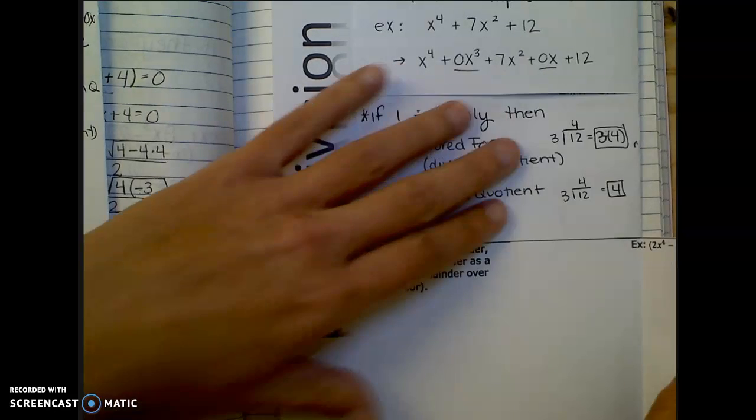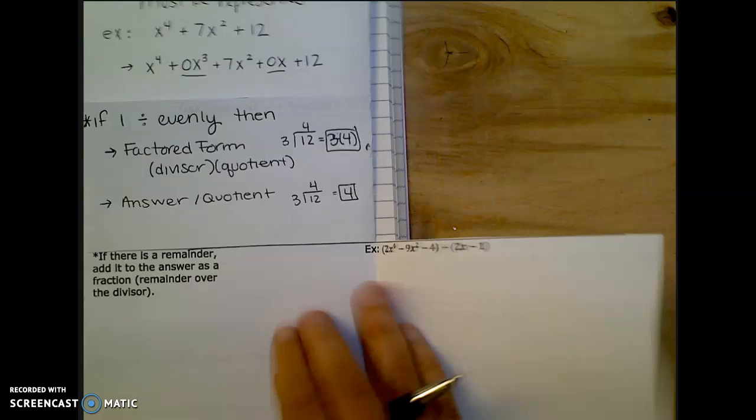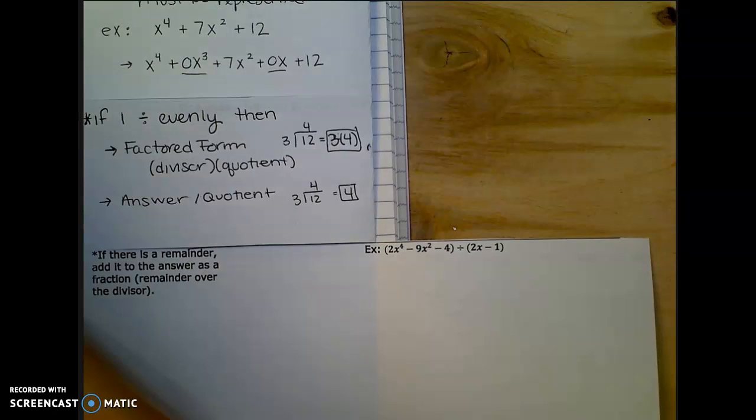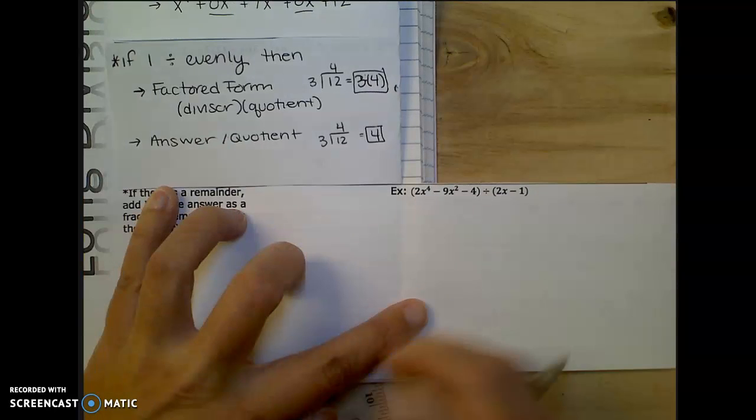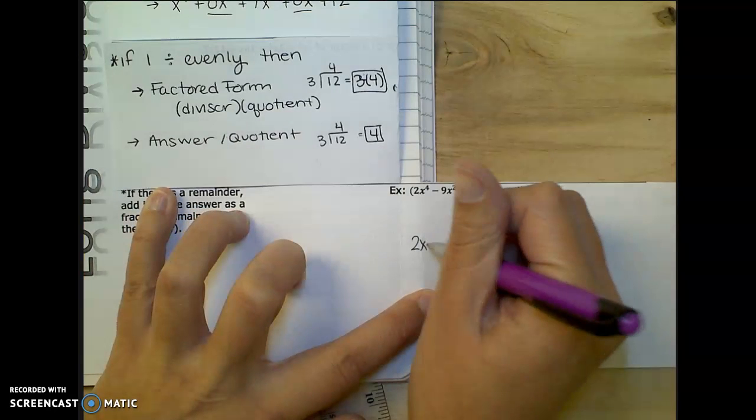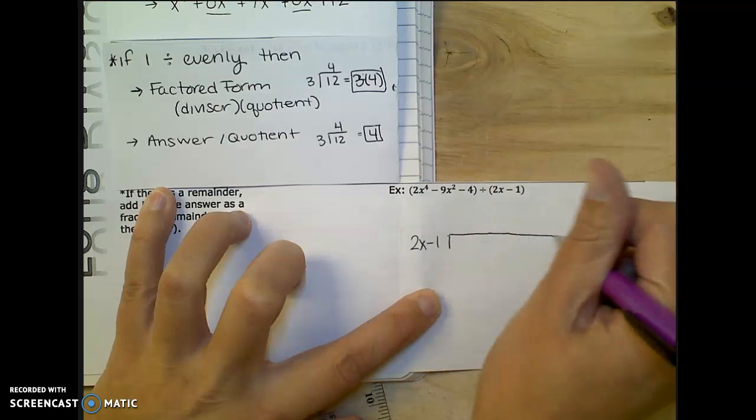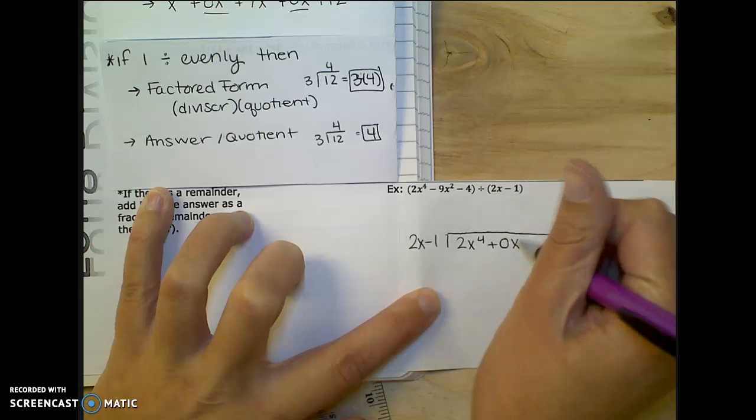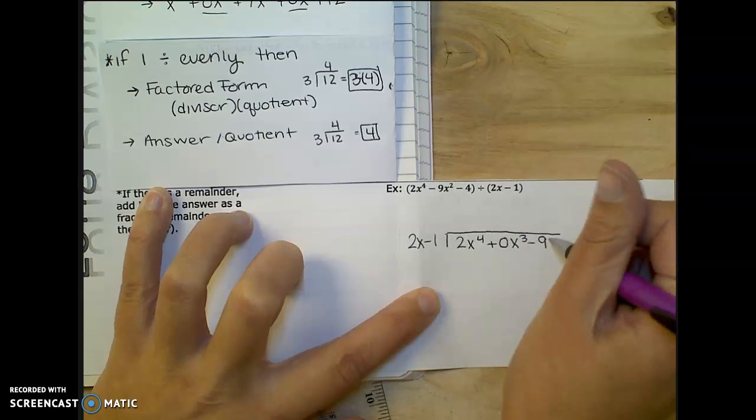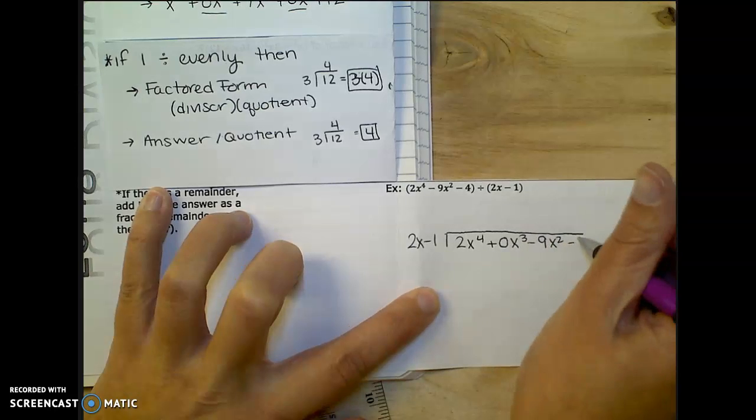So I think the only example we had left was this one at the bottom here. So I will do that one with you if you got the rest in class. So I would put 2x minus 1 outside. And then I need a 3 exponent represented inside. So I'm going to put plus 0x to the third minus 9x squared minus 4.